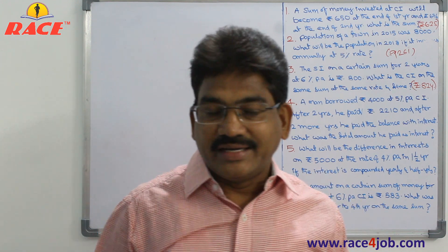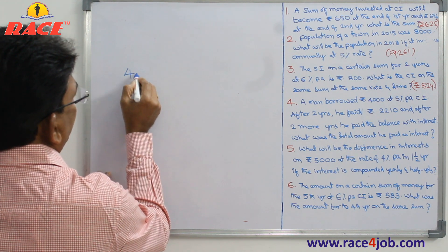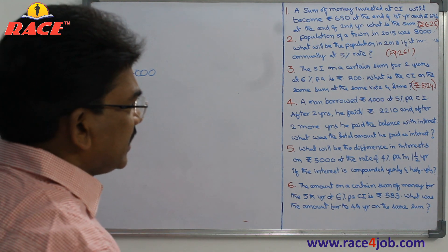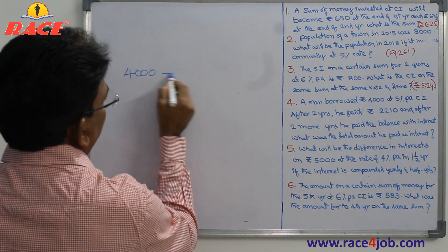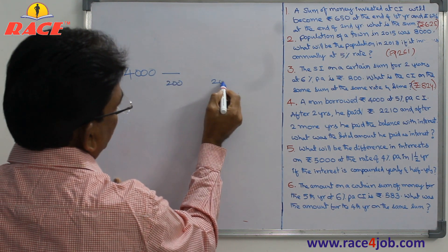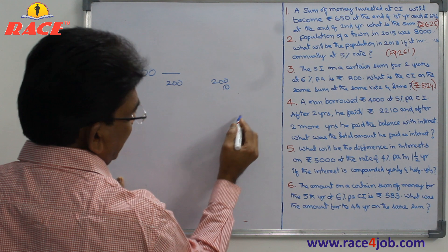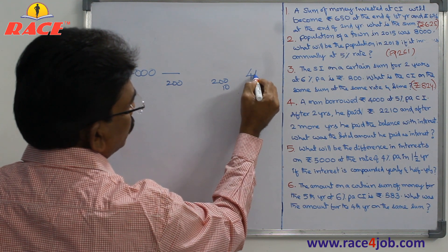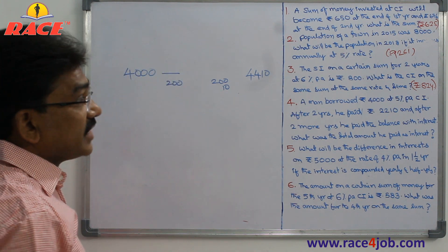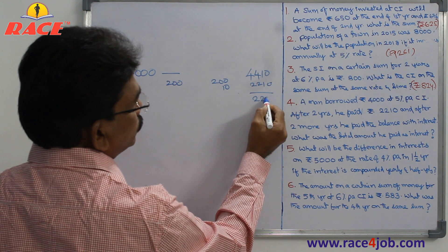4,000 rupees was taken. How much interest for 2 years at 5%? After 1 year, 5% of 4000 is 200. In the 2nd year, 200 again plus interest on 200 which is 10 rupees. So the amount after 2 years is 4,410. Out of 4,410 he cleared 2,210, so the balance is 2,200.